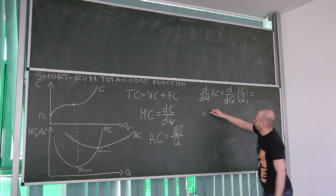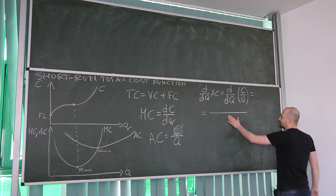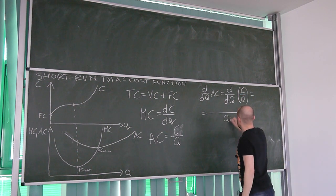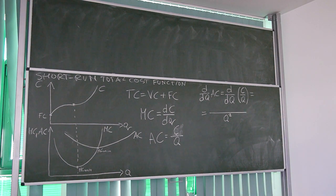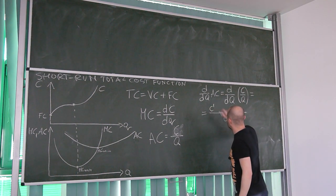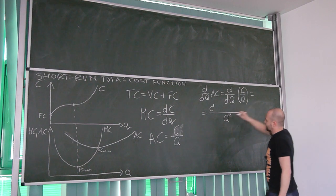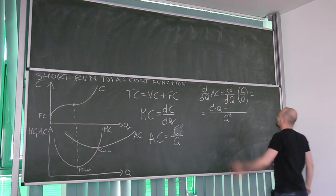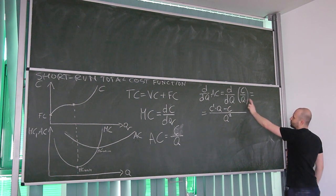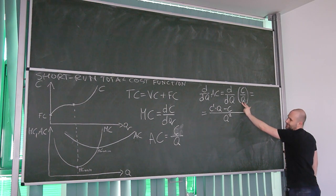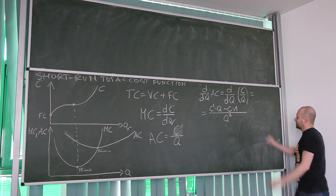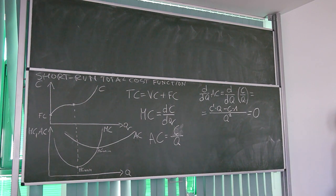Applying the quotient rule: in the denominator we take the denominator from this expression and raise it to the second power. In the numerator we have the derivative of the first expression times the second, minus the first expression times the derivative of the second. The derivative of q with respect to q is just one. This expression needs to be equal to zero.